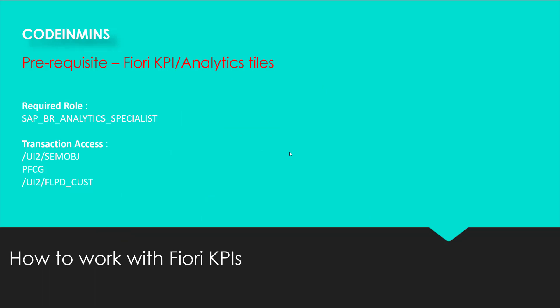As a prerequisite to work with KPI or key performance indicator tiles, there is a specific role which is needed to activate the tile we are going to use for creating the analytical or KPI tiles. There are also some transactions we need: the first one is to create a semantic object, and then adding a role to the user using PFCG to give access to the KPI tile.